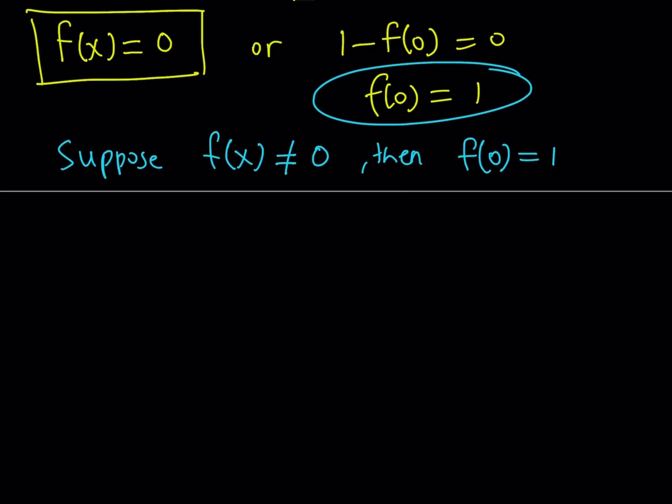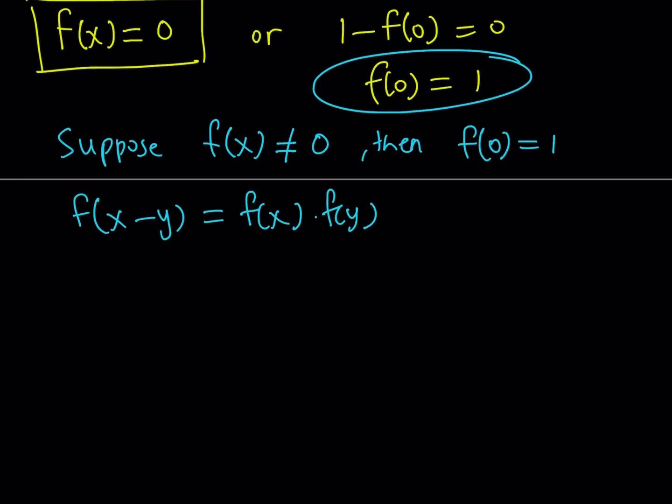In this case we can proceed as follows. Remember our original equation was f of x minus y equals f of x times f of y, this is for all real numbers. Now we're going to replace y with x. If you replace y with x, on the left hand side you get f of 0, and on the right hand side you get f of x times f of x which is f of x quantity squared.